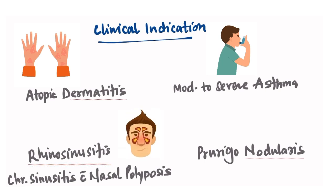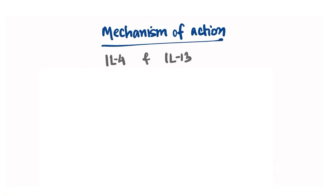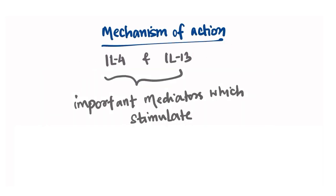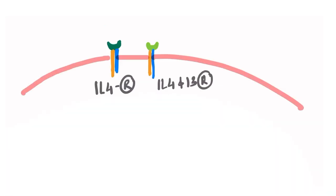Now let us learn about the mechanism of action of this drug. There are two mediators, interleukin-4 and interleukin-13. These are important mediators which stimulate inflammatory reaction. The interleukin-4 acts via two receptors: first one is interleukin-4 receptor and another one is interleukin-4 and interleukin-13 co-stimulatory receptor.